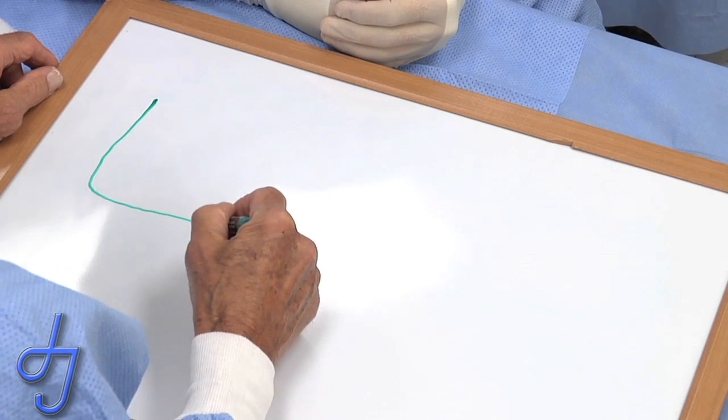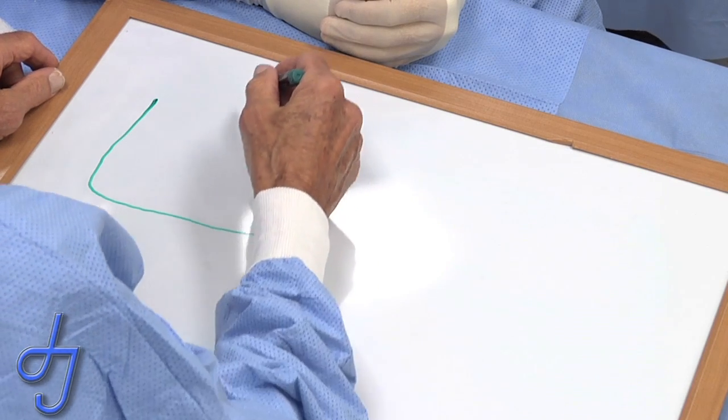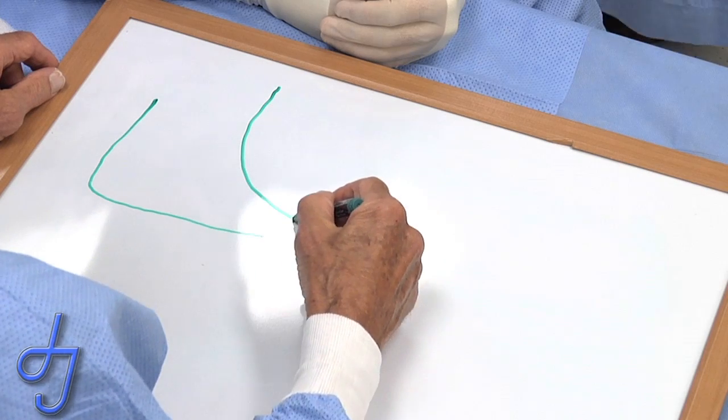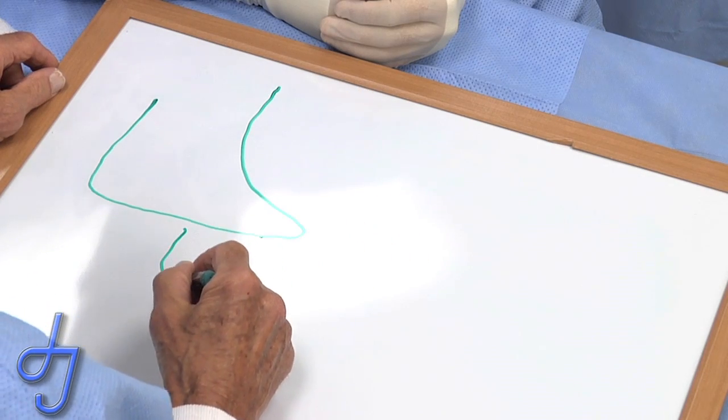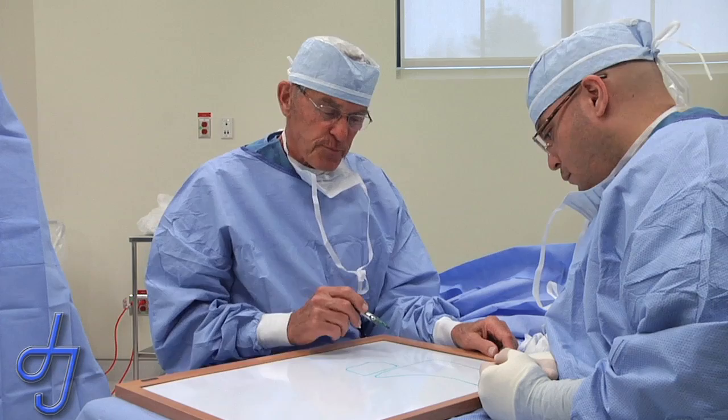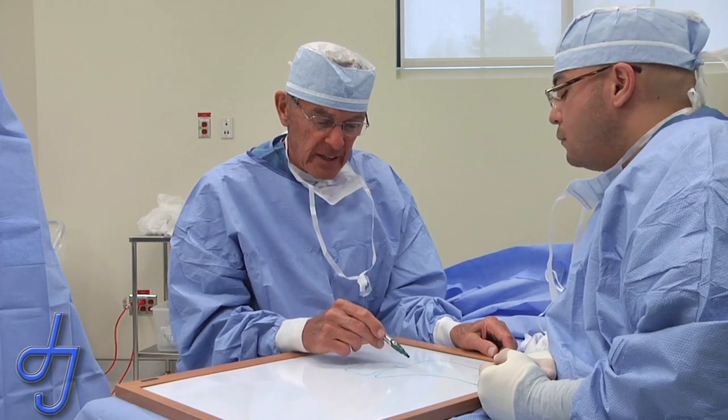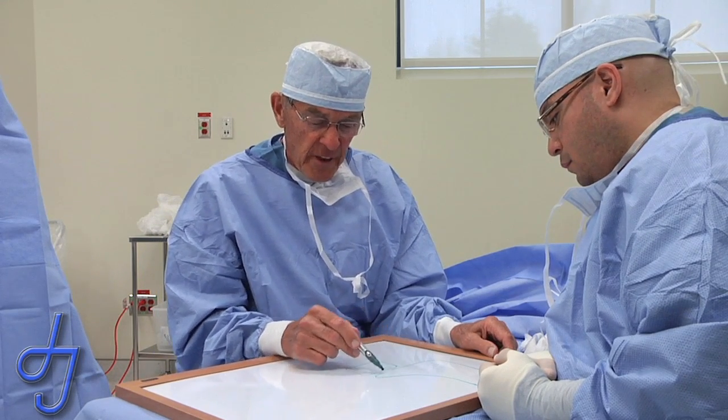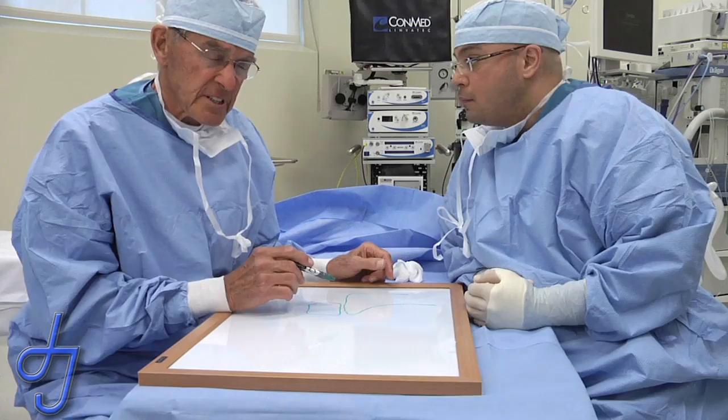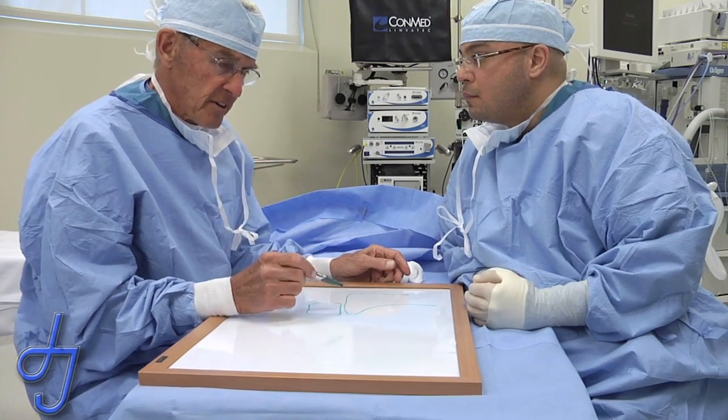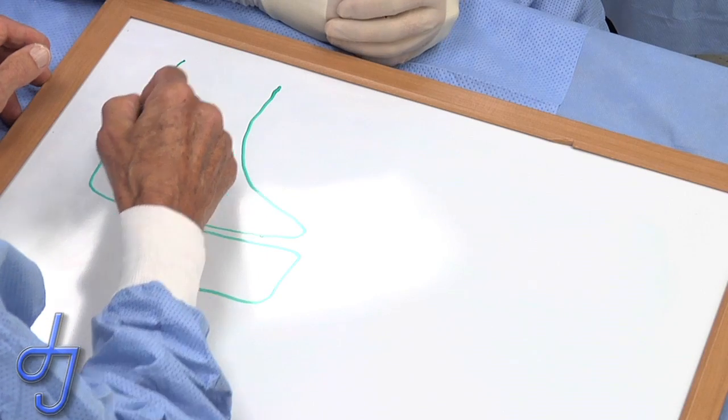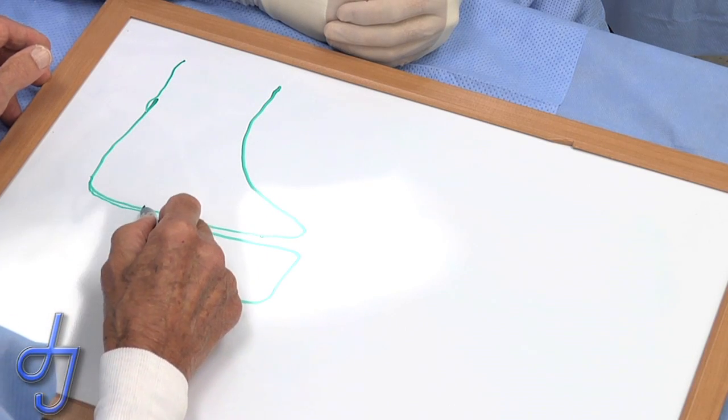As this lateral displacement occurs, as the thumb metacarpal drifts off the trapezium, the body tries to solve its problem of instability by building an osteophyte. And one of the largest osteophytes for the size of the joint in the body occurs right here at the base of the thumb. This ends up with the metacarpal looking like the toe of a boot.